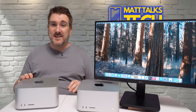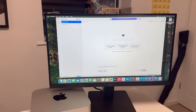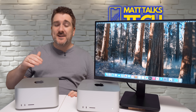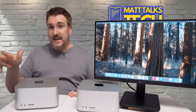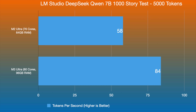Finally, I ran LM Studio with DeepSeek to test local AI models. I set both tests to 5,000 tokens with CPU and GPU cores maximized. For a 1,000-word story test, the M2 Ultra produced around 58 tokens per second — okay, not the best, not the worst. The M3 Ultra came in at 84 tokens per second, which is definitely way out in front compared to the M2 Ultra. There's a clear difference here.